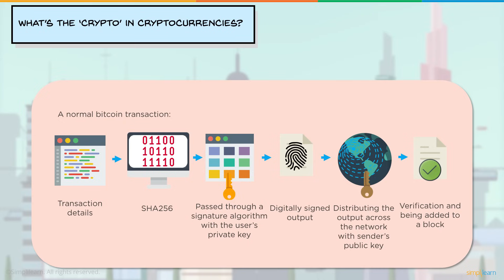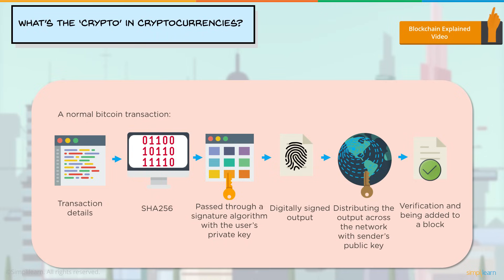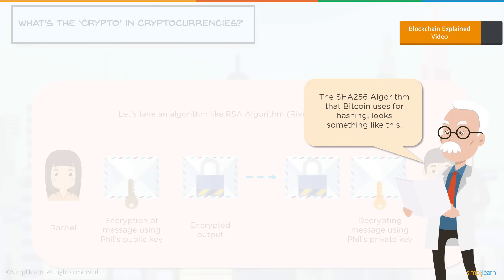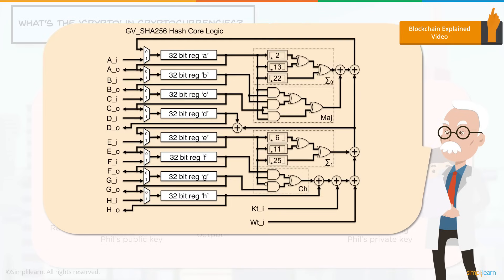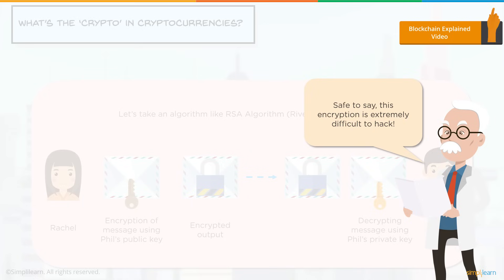If the concepts of hashing seem difficult, I'd suggest watching the Blockchain Explained video linked in the top right corner. The SHA-256 algorithm produces a complex output, and seeing how complicated it looks, it's safe to say the encryption is very difficult to hack.